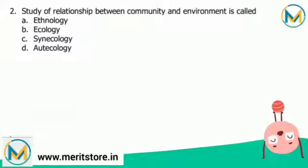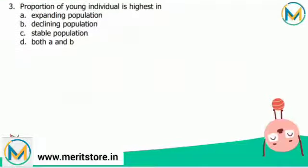Next question: the study of relationship between community and environment is called — ethnology, ecology, cynecology, or oticology? Cynecology is the ecological study of whole plant or animal communities. Plants and animals contribute to the biotic element of ecology. Cynecology is the ecological study of biotic community in relation to the environment of the place. The correct answer is option C, cynecology.